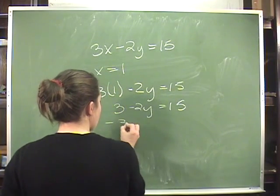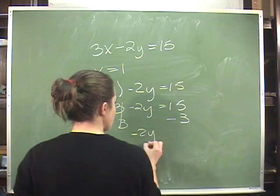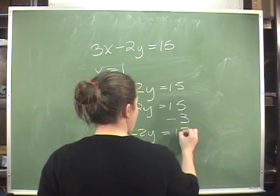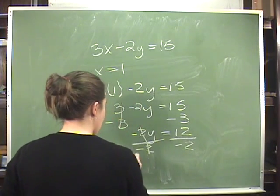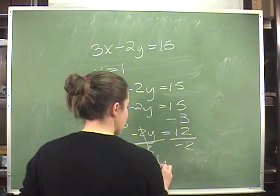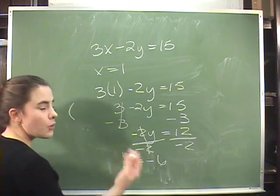And if I subtract 3 from this side and subtract 3 from that side, I'm left with minus 2y equals 12. Dividing both sides by minus 2, y is equal to minus 6.